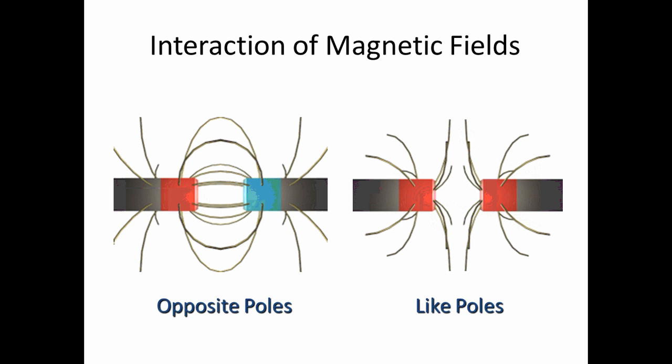So then how do the magnetic field lines look whenever you have these interactions, opposite poles and like poles? Well, these pictures should look very familiar. Remember, opposite charges had that from positive to negative arcing that was going on between them.